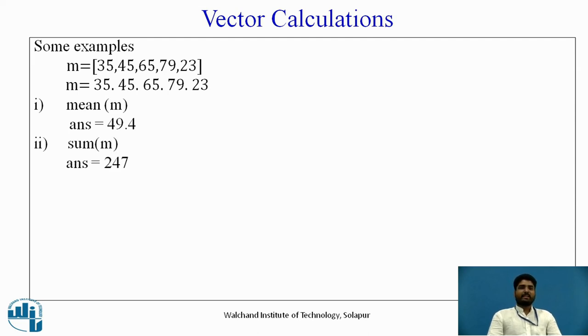In the same way, we can calculate the sum of all 5 numbers. For that the command is just type sum in round bracket type m, sum of m that is summation of all 5 numbers, the answer will be 247.